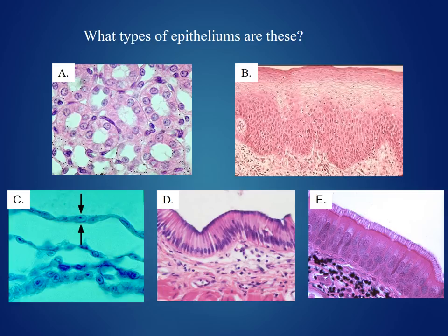Looking at image A: how many layers are there? There appears to be one layer. What do the cells look like? They appear to be cube-like. We know this is epithelial tissue. Putting it all together: simple, because there's one layer; cuboidal, because the cells are cube-like — so this is simple cuboidal epithelium.